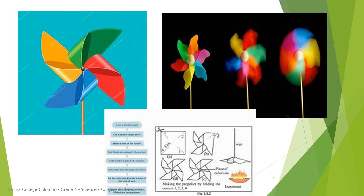Again, switch off the fan and observe it. It stopped. Now you can understand: when there is wind, only the wind propeller starts to rotate. That means the wind propeller got energy from the blowing wind. Here you can see a picture of a wind propeller, and after we are taking it near to a fan.